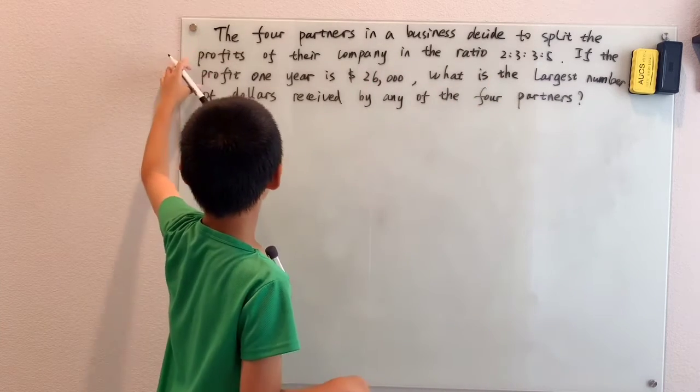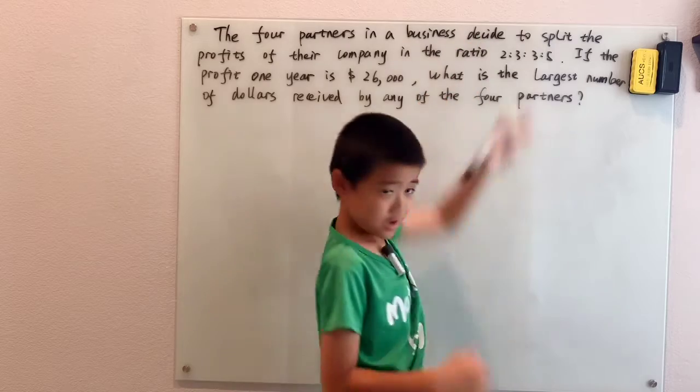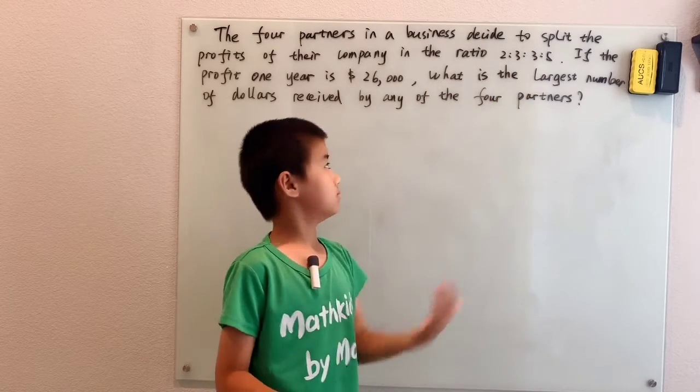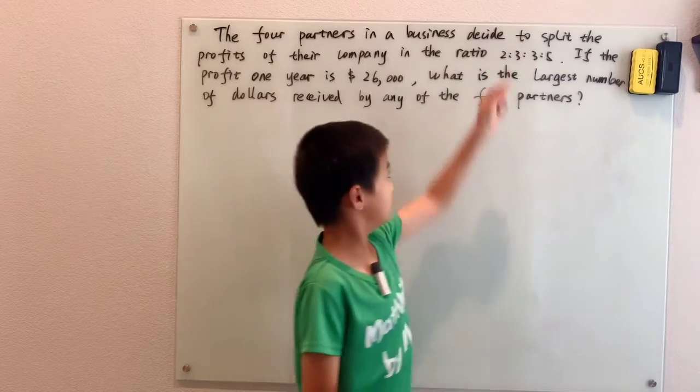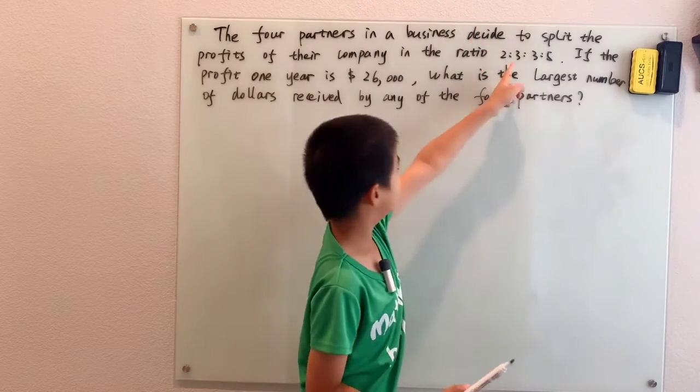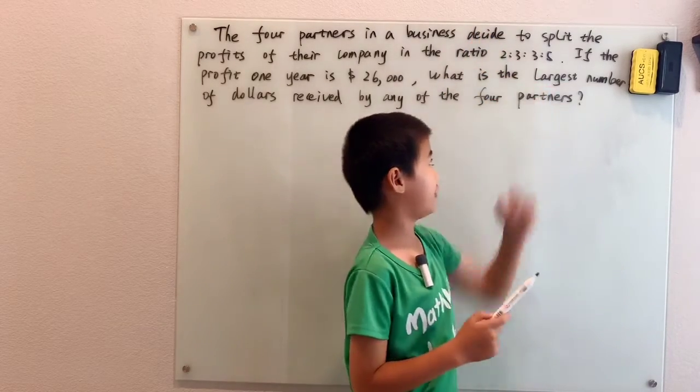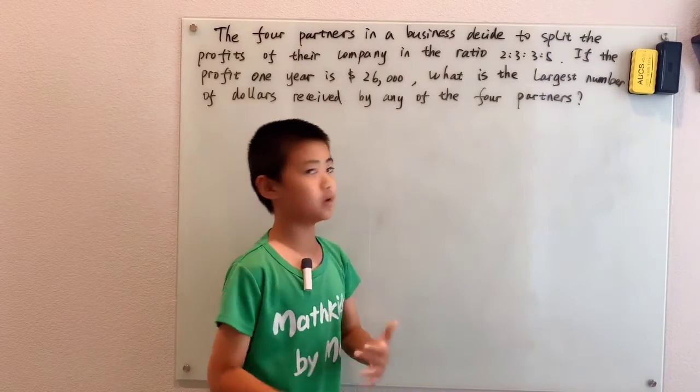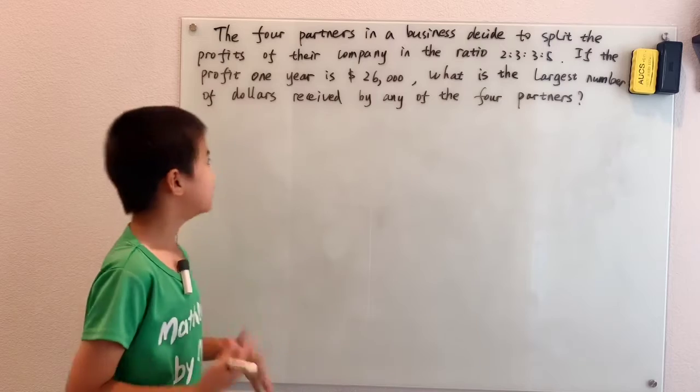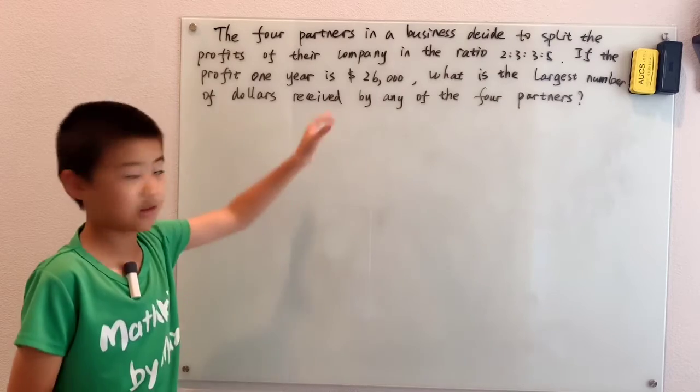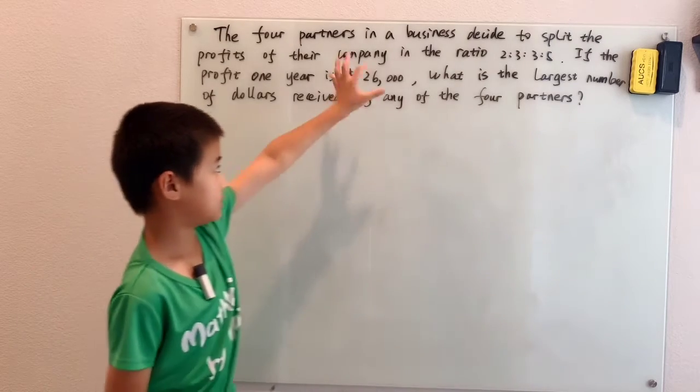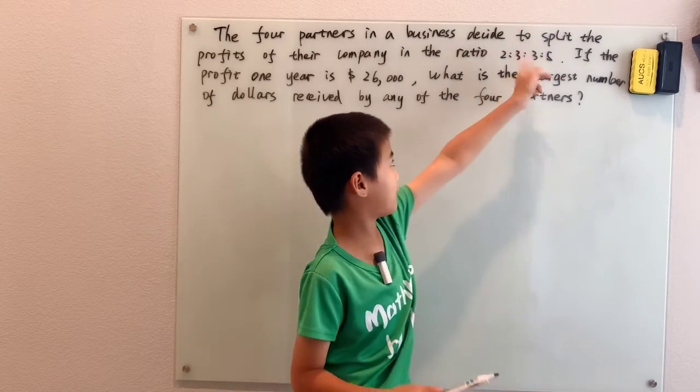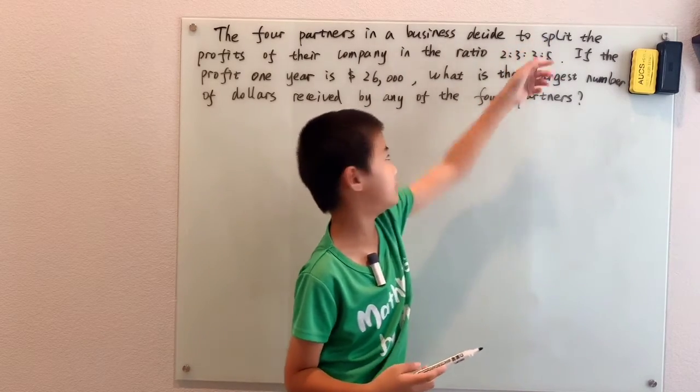Let's see, ratios - 2 to 3 to 3 to 5. Each one of those, like 2 is two ones, 3 is three ones, 3 is another three ones, 5 is five ones - you can pick them as one part. This is how I like to do a lot of ratio problems that look like this, where you have some numbers and you're given a ratio and you have to figure out one of these numbers.